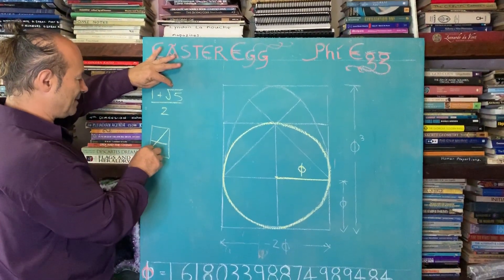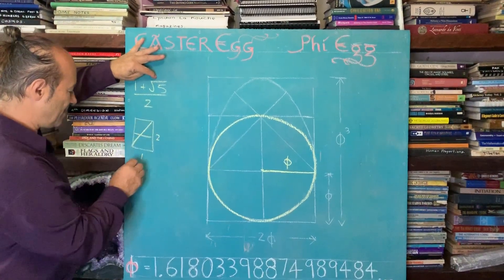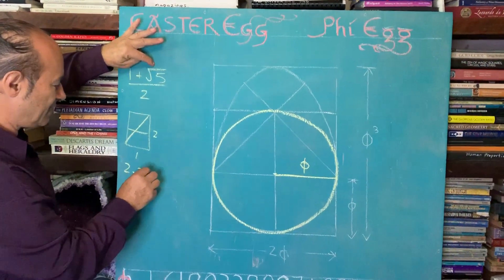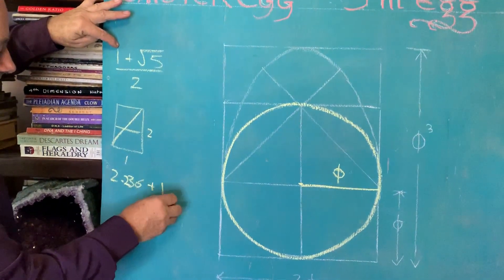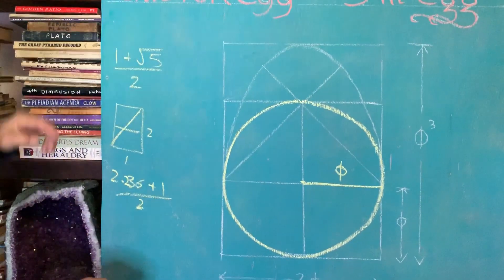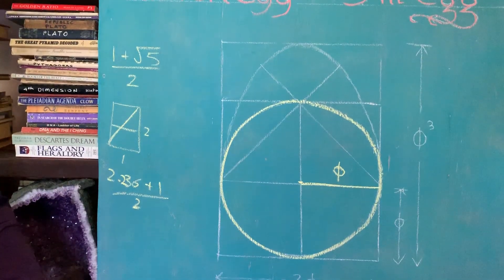So it's the diagonal of a double square. If that's 1 and that's 2, this value is 2.236. 2.236 plus the 1 and we divide it by 2.